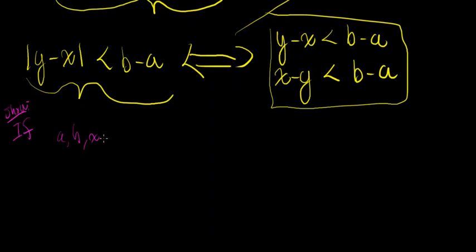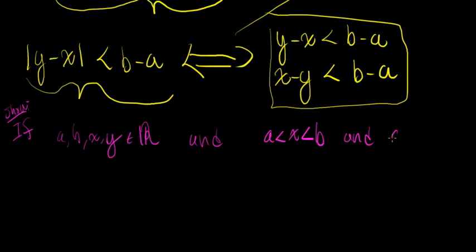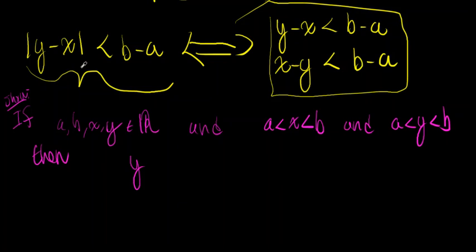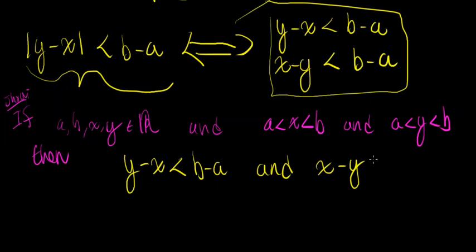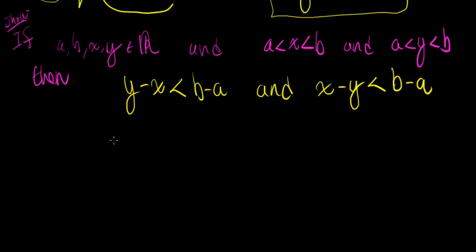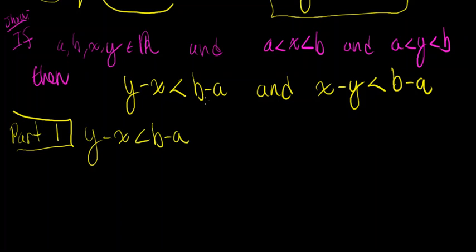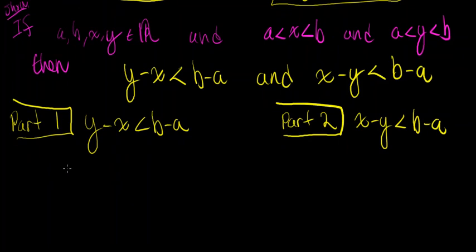So, what we want to show is: if A, B, X, and Y are elements of the real numbers, and A is strictly less than X, which is strictly less than B, and A is strictly less than Y, which is strictly less than B, then Y minus X is strictly less than B minus A, and X minus Y is strictly less than B minus A. Now we've broken this down into a more accessible problem. Let's split this into two parts: part one, show Y minus X is less than B minus A; part two, show X minus Y is strictly less than B minus A.